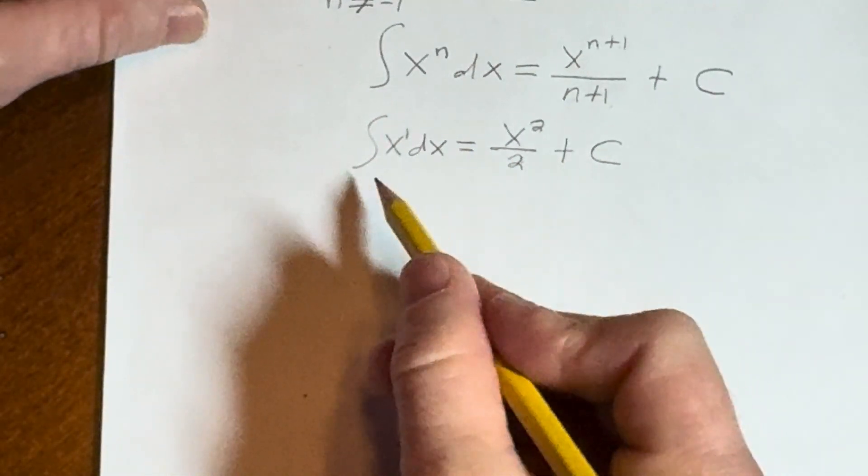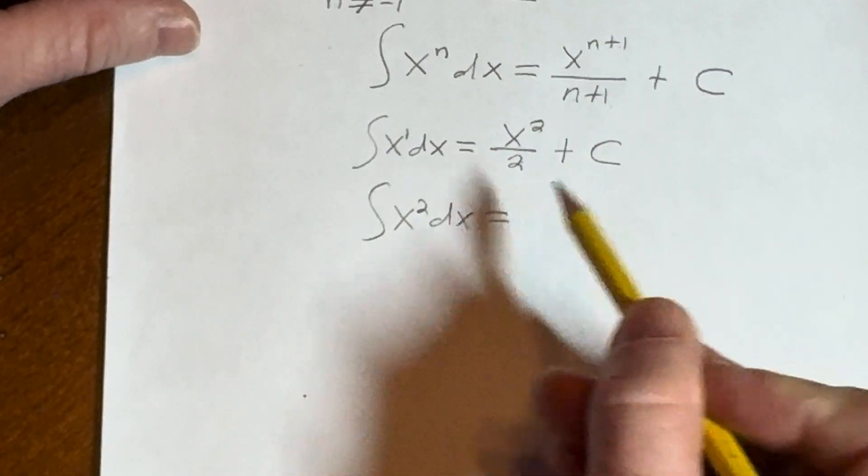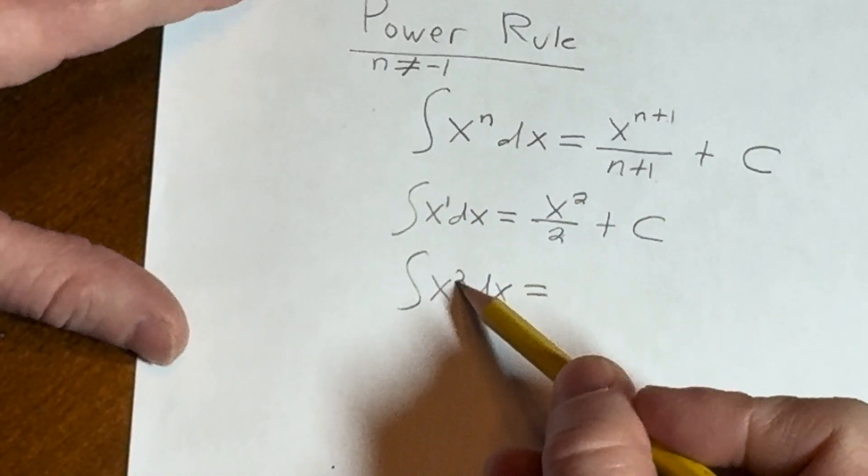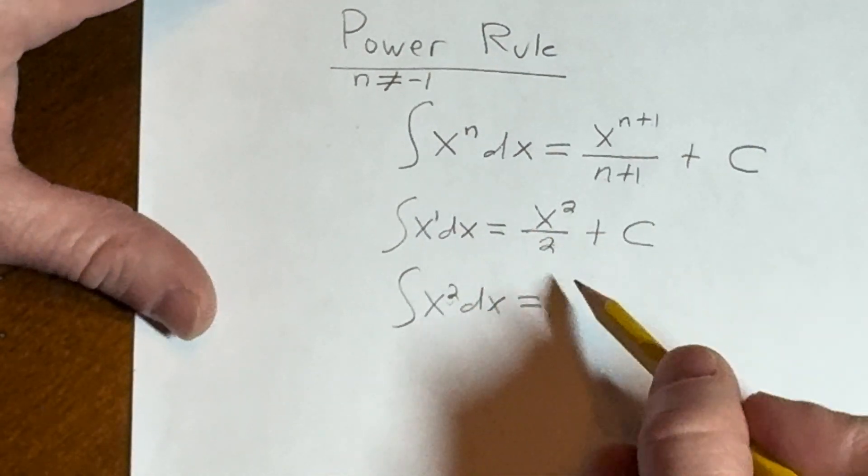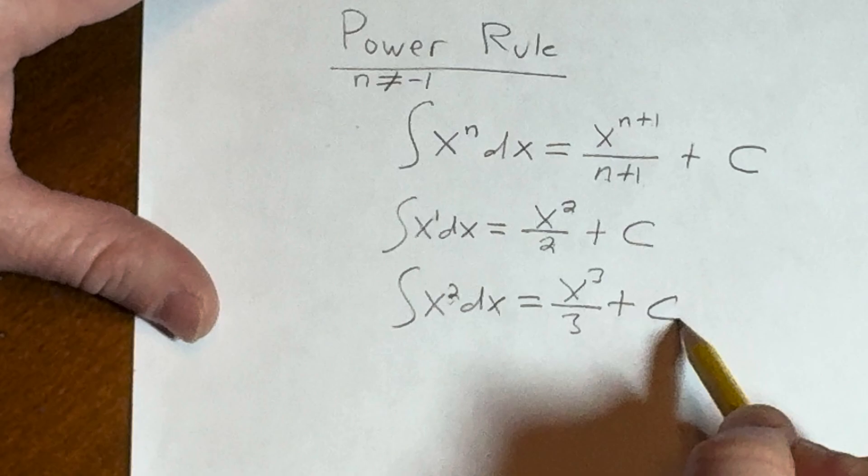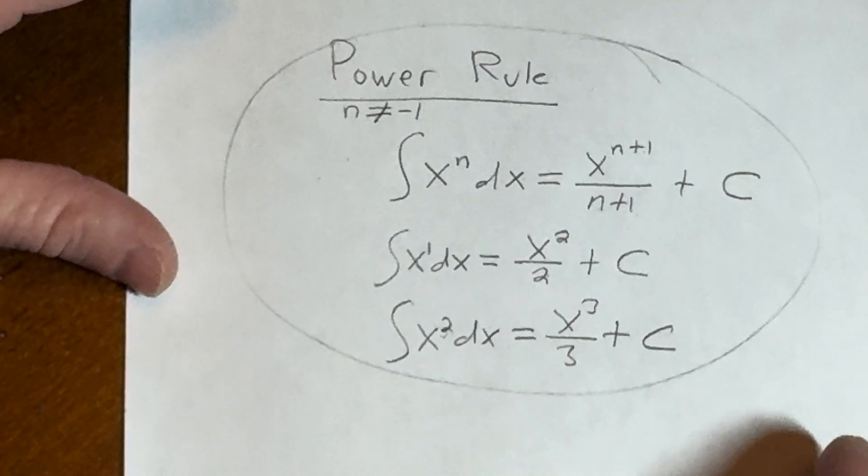Let's go ahead and do that again but now let's look at x squared dx. Same thing except in this case n is two, so we add one so it's going to give us two plus one which is three, divided by two plus one which is three, plus our constant of integration. That's the idea behind the power rule from calculus.